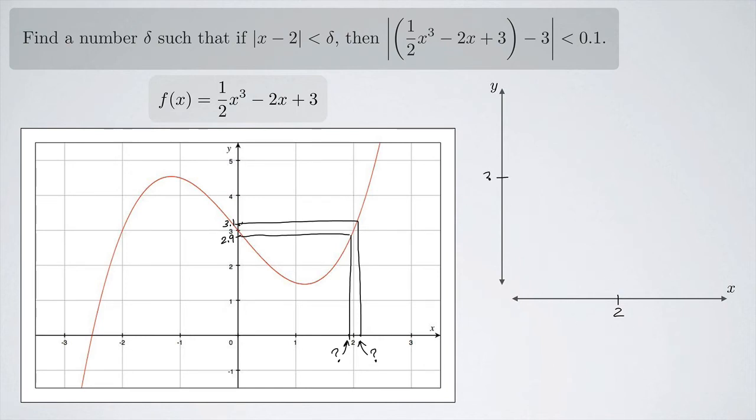And then we have the 3 over here, and so we were looking at 3.1 and we were looking at 2.9. And the reason I'm picking these is because I'm looking at 0.1 away from 3, either above or below. And I want to know what these essentially map to. So I know that this 2 right here, if I were to follow this up and over, would map to the 3. I want to know what these would map to on either side of the 2 here, so something like this.